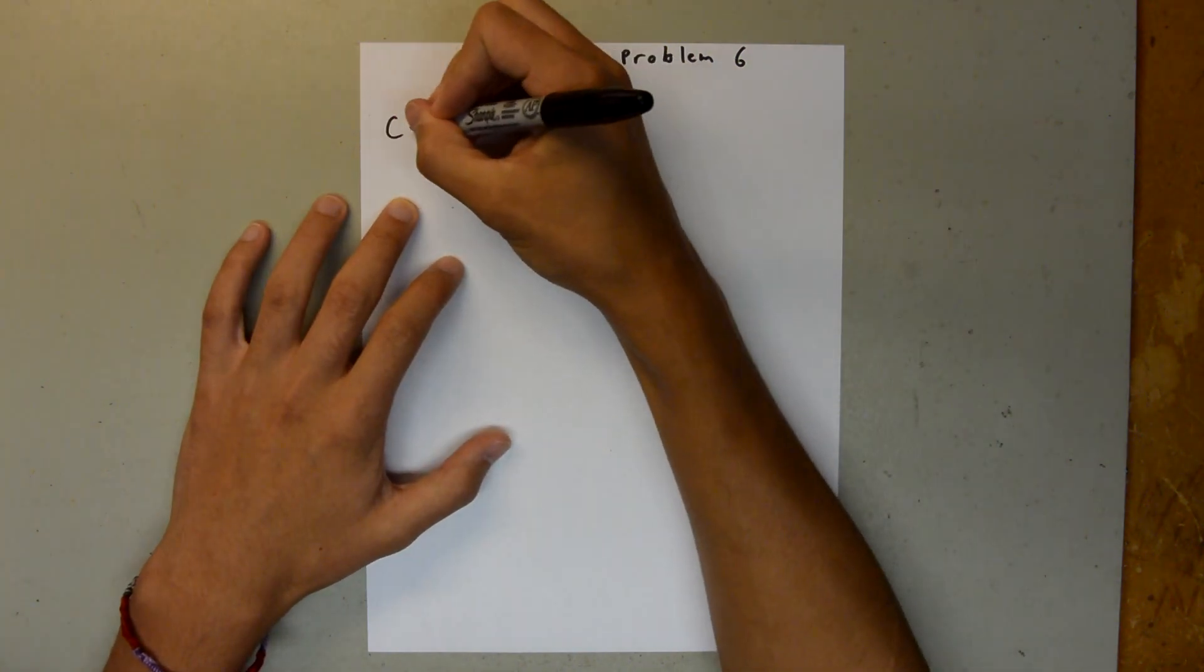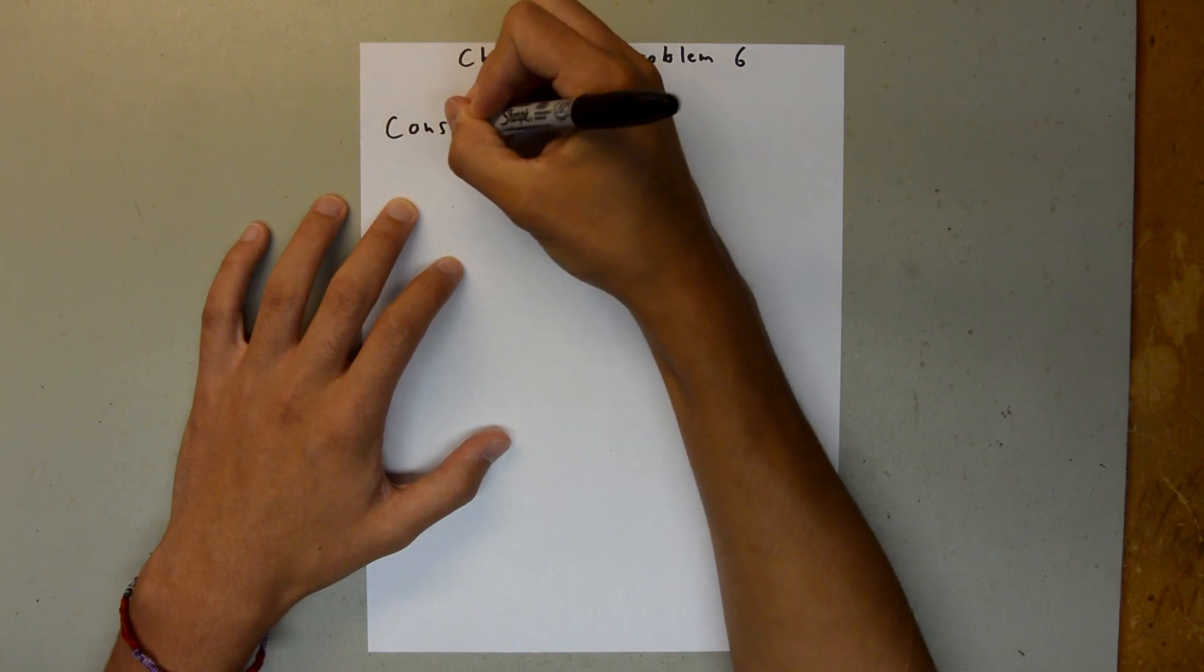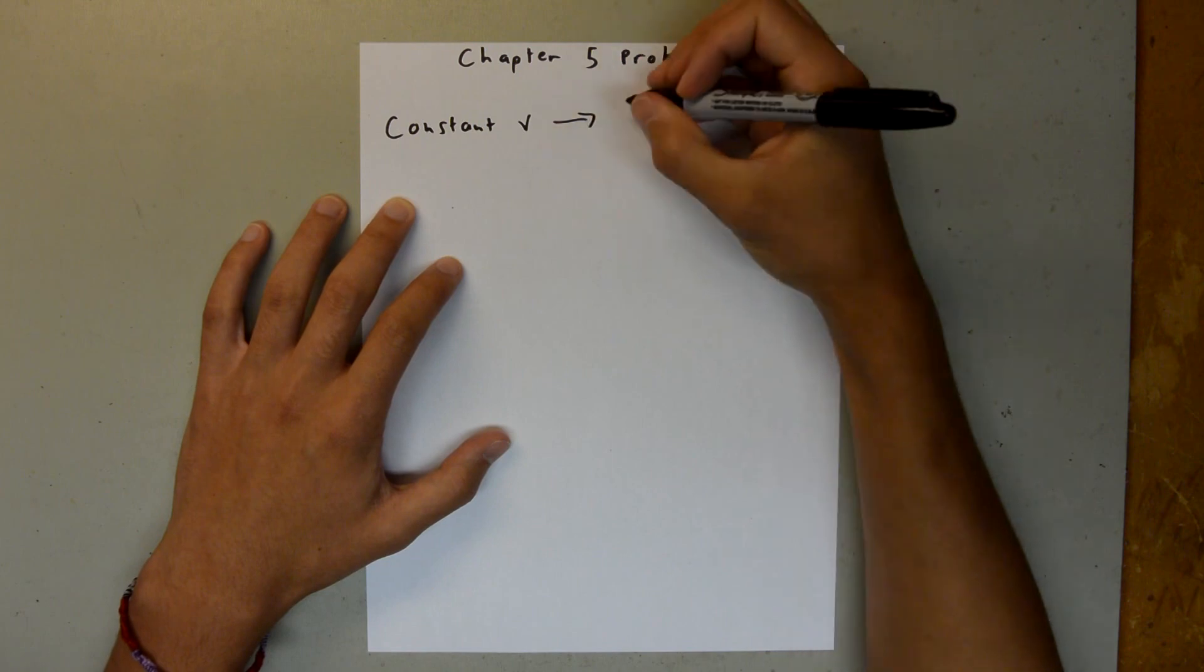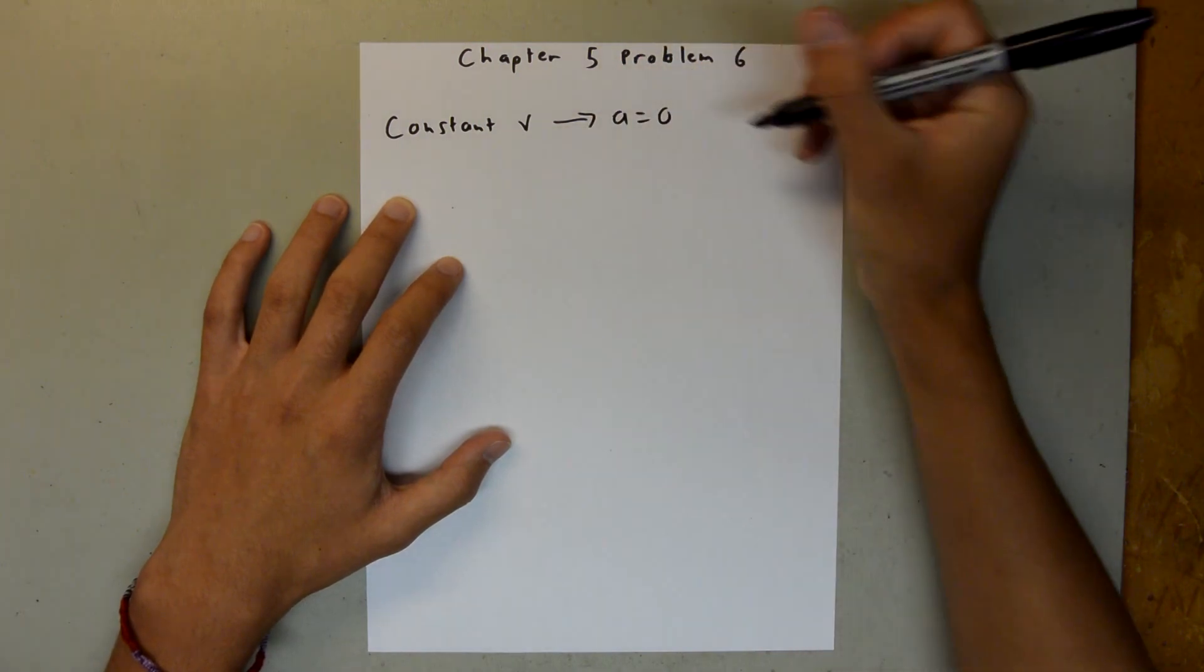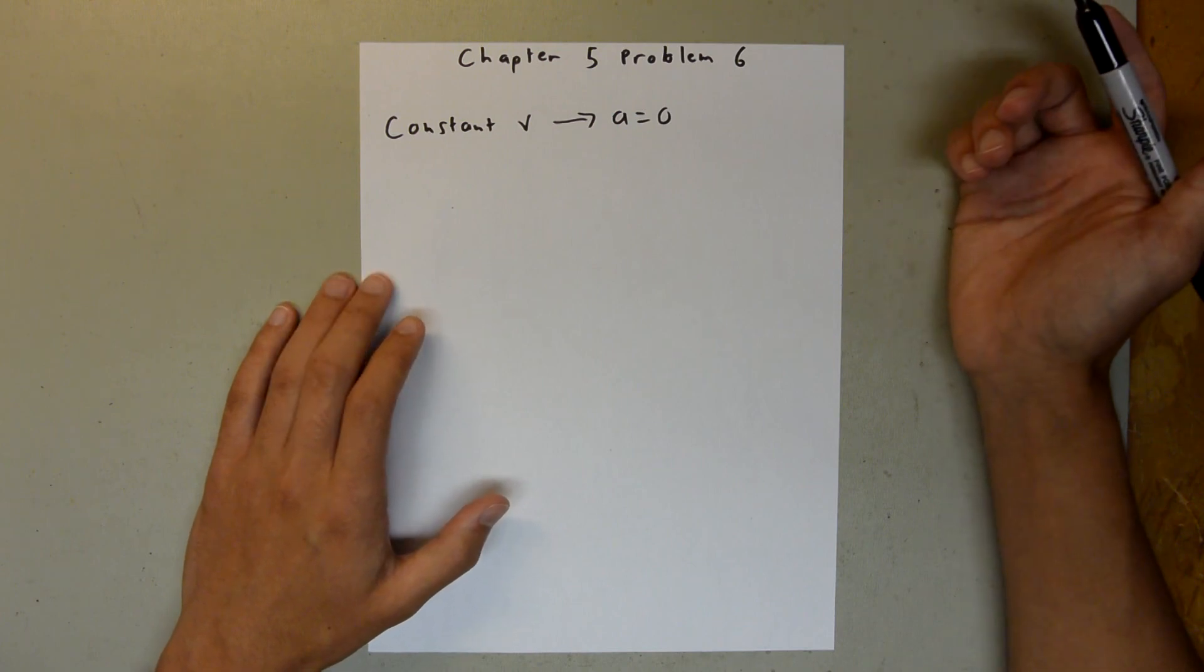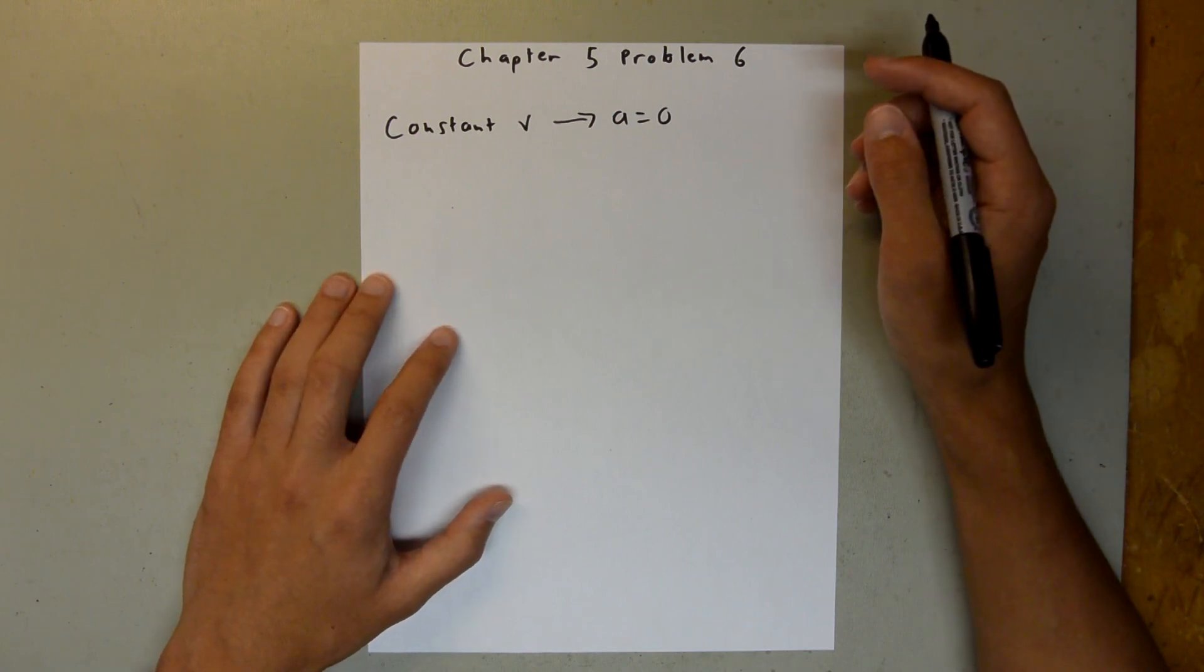So, since we're told that there is constant velocity, that means the acceleration is equal to zero, which makes sense because acceleration is the change in velocity over time, and since the velocity is not changing, the acceleration is zero.